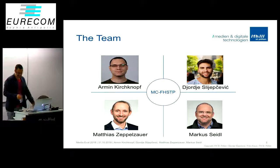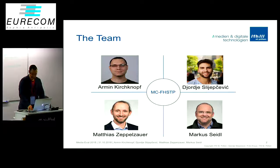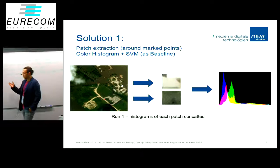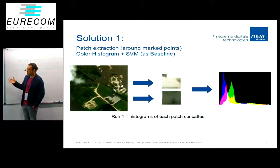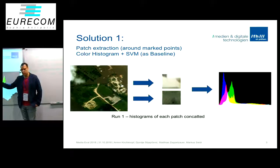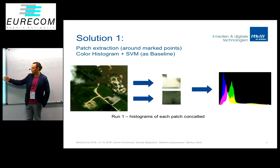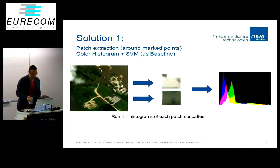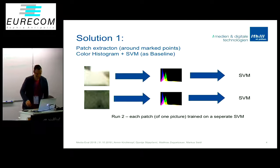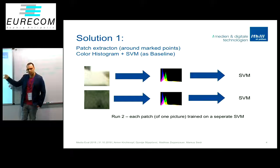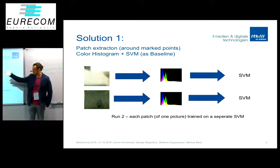Markus also participated in the satellite image task. That's why I'm starting with our first approach in the satellite image task. We used a basic approach: extracting patches out of the provided data, concatenating them into one histogram, and training an SVM with it. This was mainly our first run.